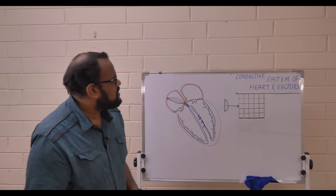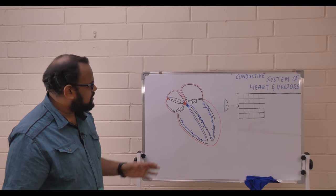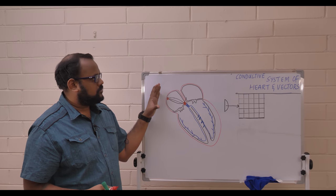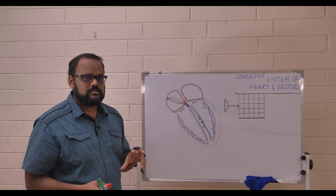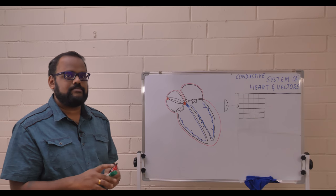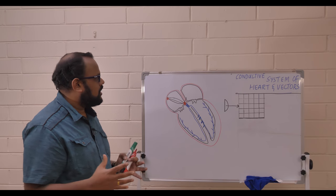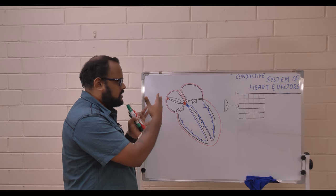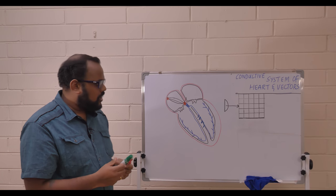Now we're going to discuss the conductive system of the heart and vectors. This is basically a cross section of the heart. In the previous lecture we discussed cardiac action potential happening in one particular cell. Now we're going to have a comprehensive look at the cardiac action potential which gets transmitted from one side of the heart to the next, resulting in cardiac contraction.